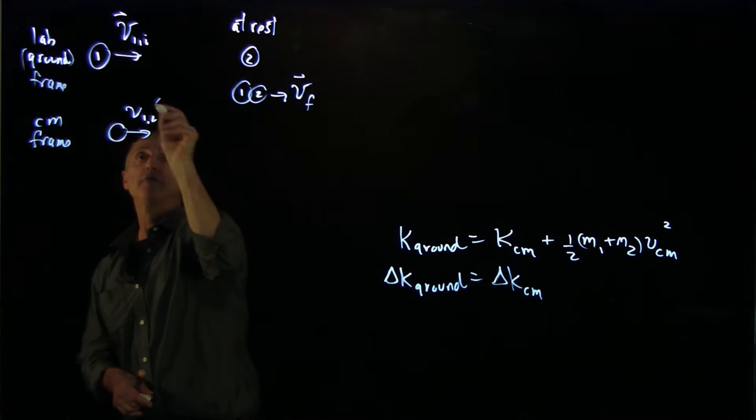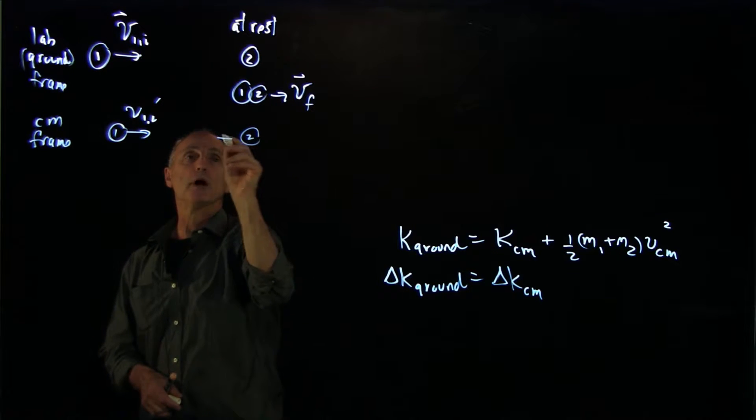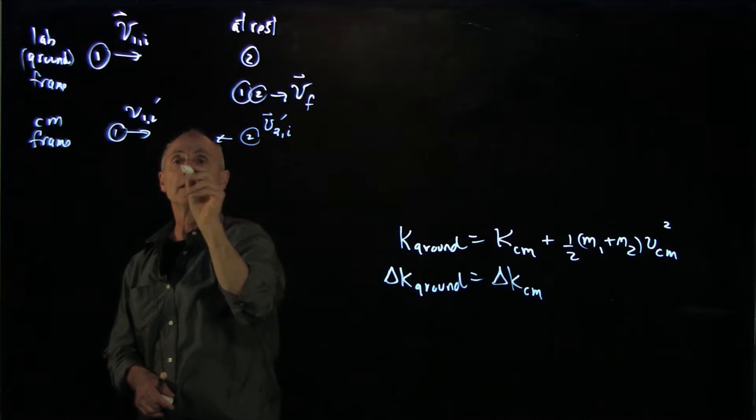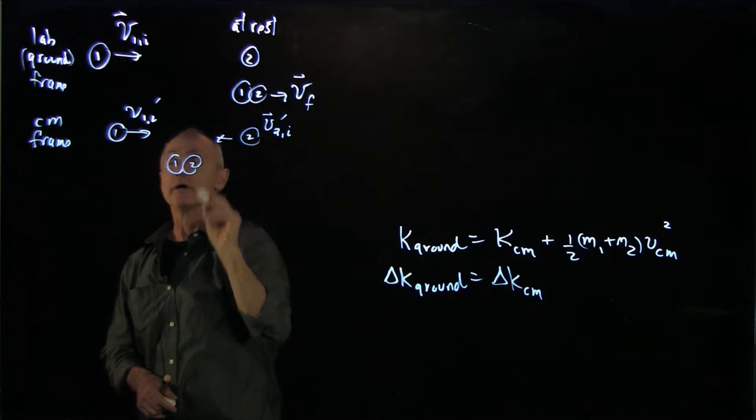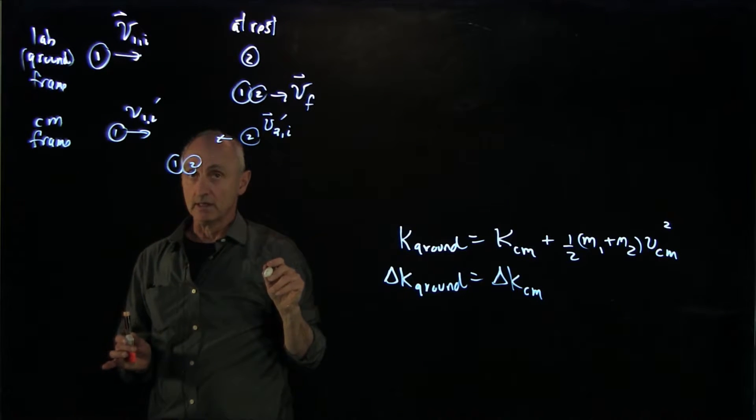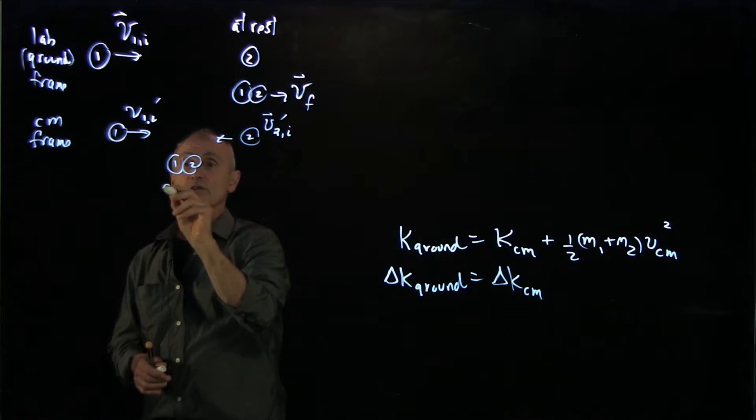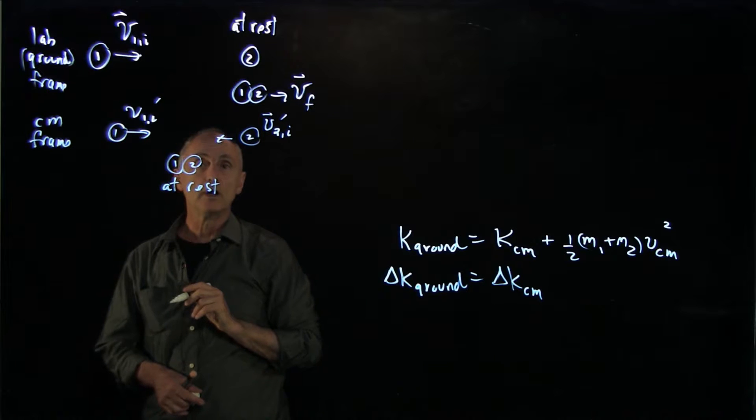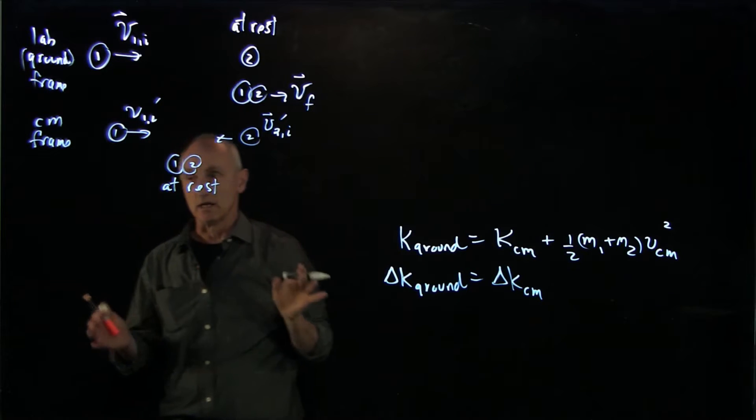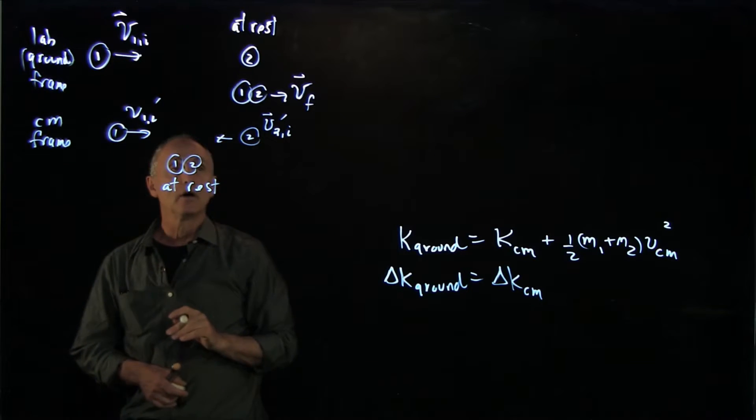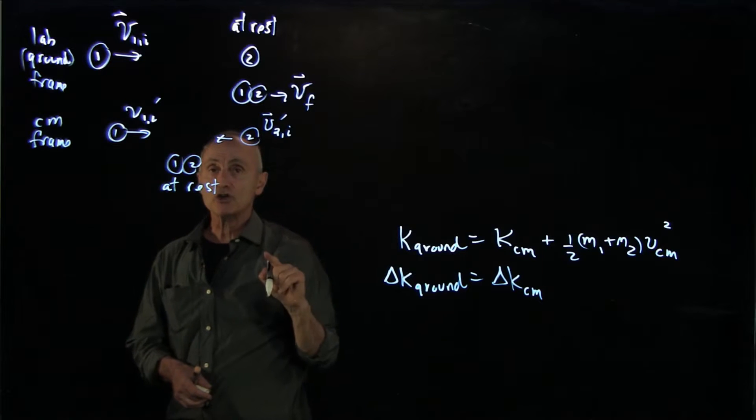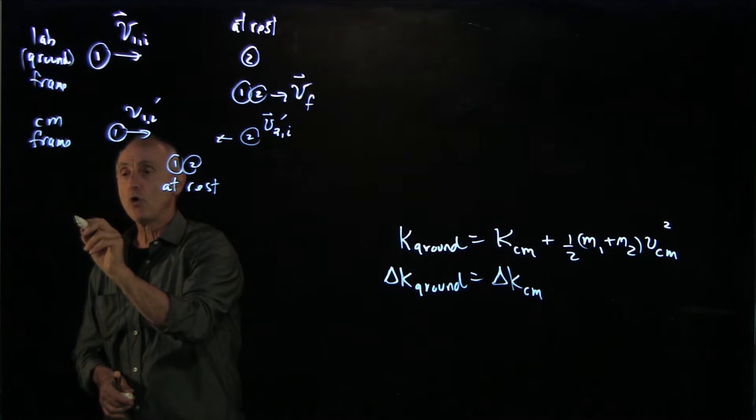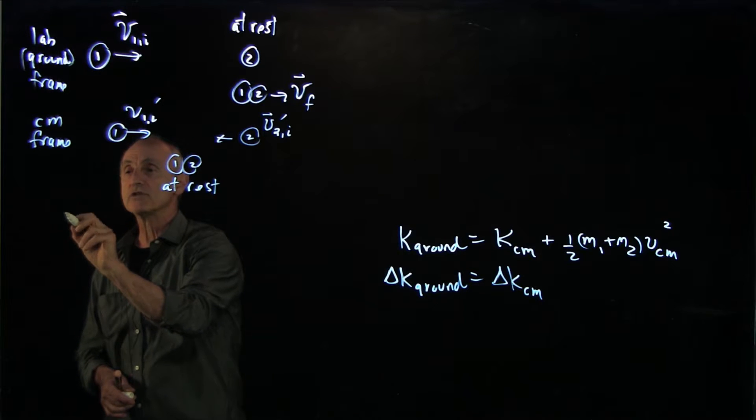There we have v1 prime and v2 prime, they're both moving. Now in the center of mass frame, they're at rest at the end of the collision. So in this collision, we can analyze it. What I want to show is that the change in kinetic energy - recall from our previous calculation that the kinetic energy in the center of mass frame was equal to 1 half mu times the relative velocity squared.